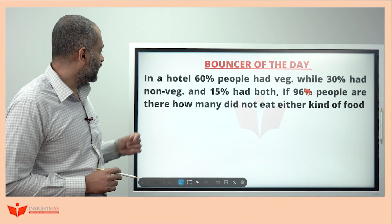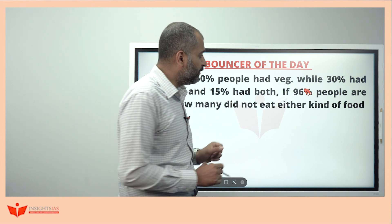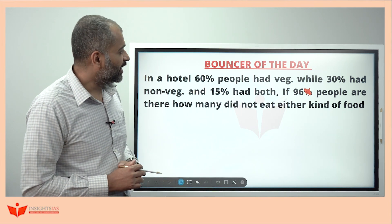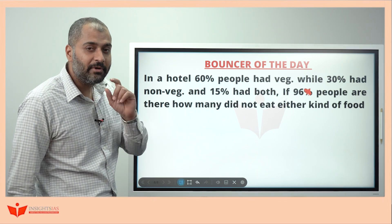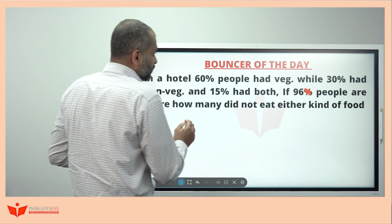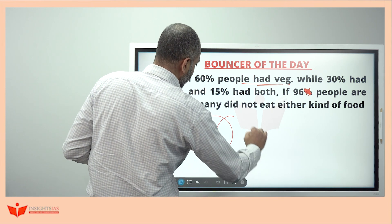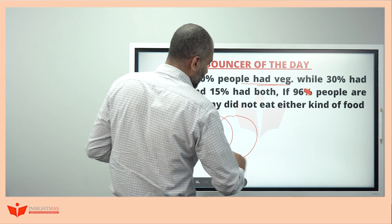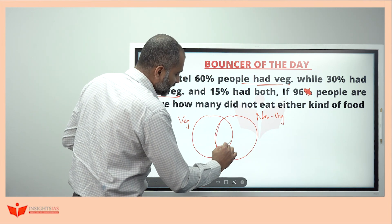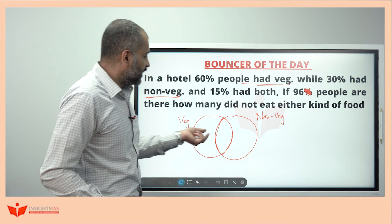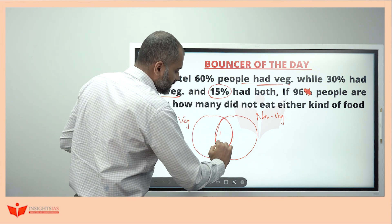Now let us solve yesterday's bouncer question. In a hotel, 60% of people had veg, 30% had non-veg, and 15% had both. If 96 people are there, how many did not eat either kind of food? We can use a Venn diagram with two circles — one representing veg and one representing non-veg. Always start from the maximum intersection point, which here represents having both. 15% had both, so write 15% in the intersection.